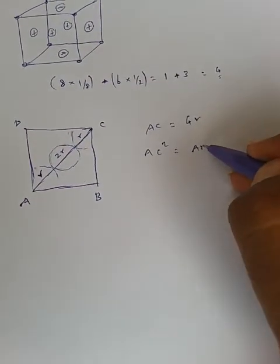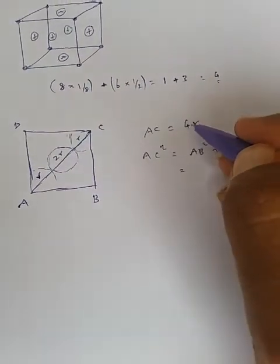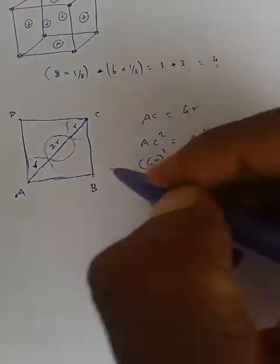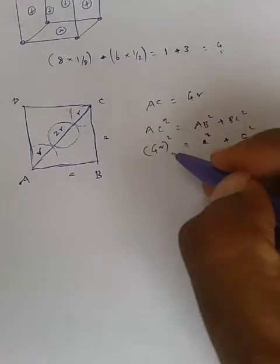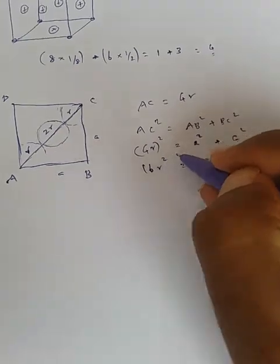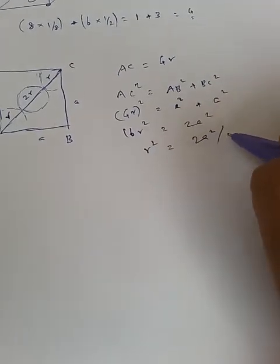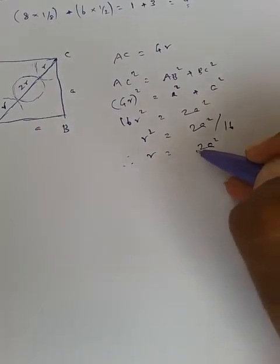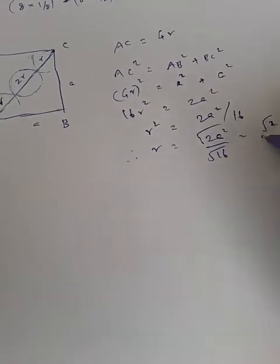Applying the Pythagorean theorem: AC squared equals AB squared plus BC squared. AC in terms of atomic radius is 4R, so 4R squared equals A squared plus A squared, which gives 16R squared equals 2A squared. Therefore, R squared equals 2A squared divided by 16, and taking the square root, R equals root 2 times A divided by 4. This is the atomic radius value for the FCC structure.